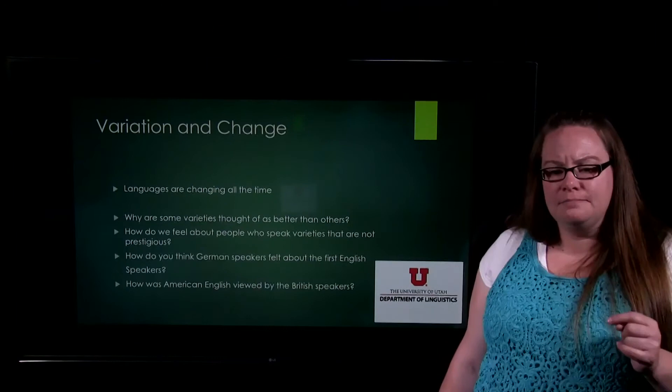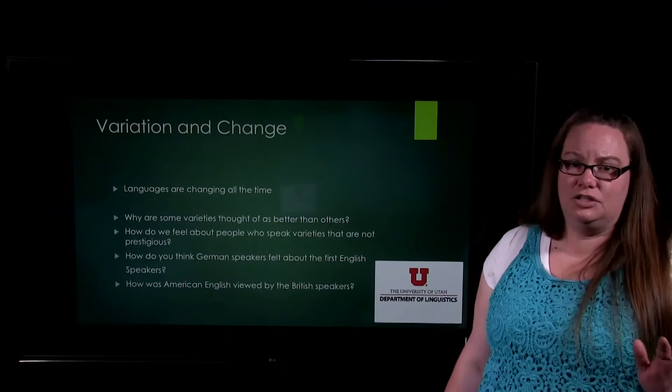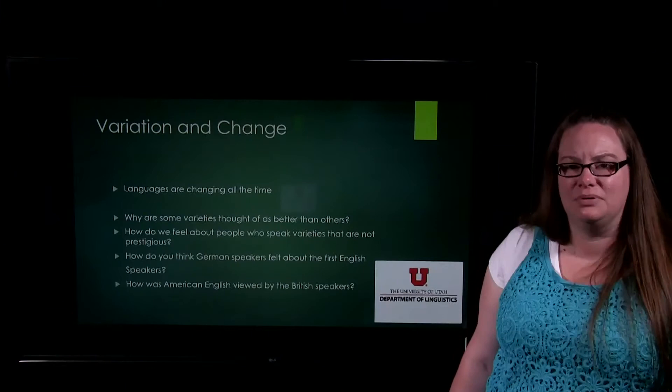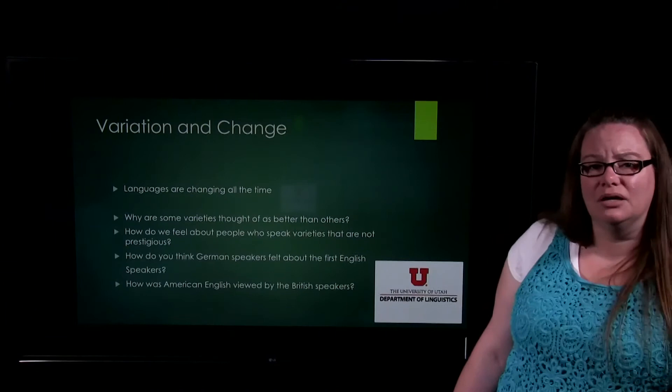Why is it that we view some varieties as better than others? Why do I view some as more educated and others less, when education may not have anything to do with it? And how do I feel about people who speak varieties that are not prestigious — varieties I view as lower in social class? Why do I view those people as lower, and why do I even view those varieties as lower?